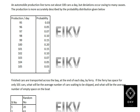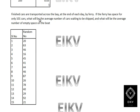The total probability sums to 100%. The cars are transported across the bay at the end of each day by ferry. If the ferry has a space load of only 101 cars, what will be the average number of cars waiting to be shipped, and what will be the average number of empty spaces on the boat?